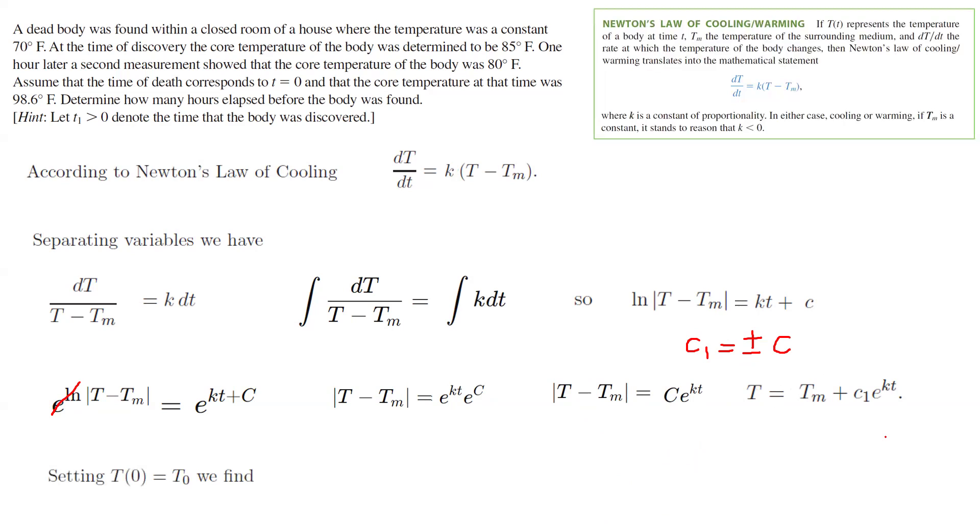Setting T at time 0 to be T sub 0, we can write C1 to be T sub 0 minus Tm. Remember that if you plug in 0 here, it becomes e to power 0 or 1. So T minus Tm becomes C1. And then at time 0, because T is equal to 0, let us call this T sub 0, the initial temperature. C1 is T sub 0 minus Tm.